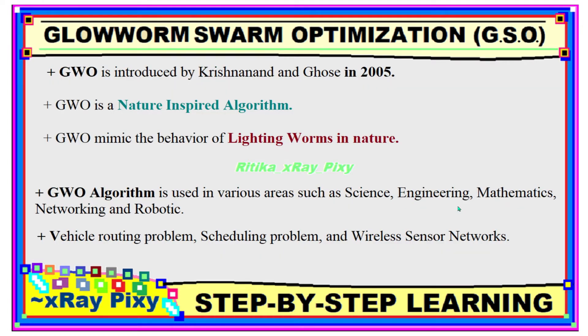Glowworm Swarm Optimization algorithm was introduced by Krishnanand and Ghose in 2005. This is a nature-inspired meta-heuristic algorithm that mimics the behavior of glowworms in nature. As we all know, glowworms are insects that release excess energy as a glow, and they emit either blue or green light. They eat other insects, and many species of glowworms also feed on fungus.